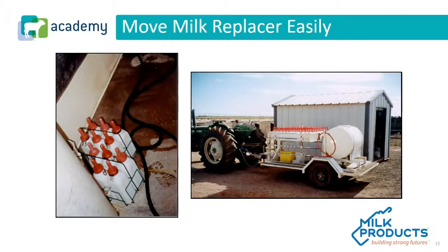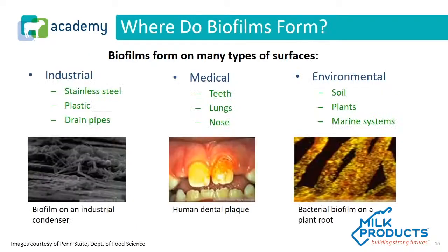Being able to move milk replacer or feed easily around the farm gives workers good equipment to do their job. Now let's think about biofilms. A biofilm is something that can form on many different types of surfaces — in industry on plastic, drainage pipe, or stainless steel. In medicine, a good example of biofilm is what happens on human teeth when not brushed properly; the biofilm builds up into plaque and then calculus. On plants in water, that slimy feeling you get is a biofilm starting to form.